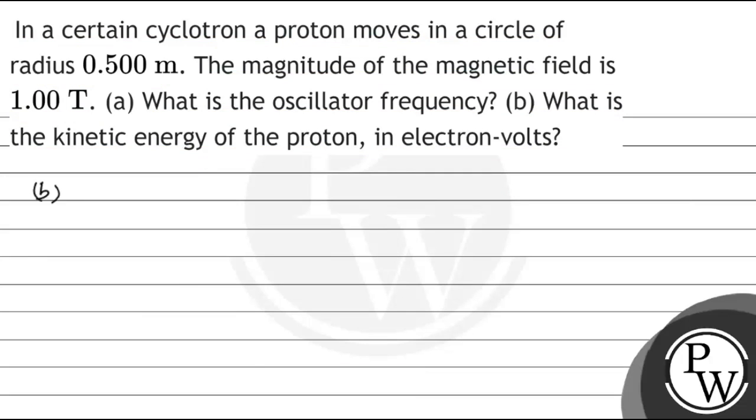For kinetic energy: the radius R = mv/(qB), where mv can be written as √(2mK), with K being kinetic energy. From this, K = (RqB)²/(2m).